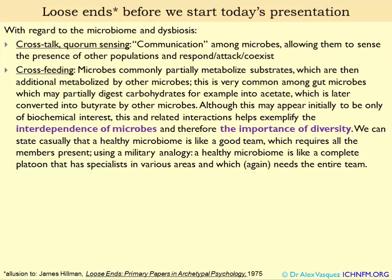Crossfeeding is another important concept. Not all microbes have all of the enzymatic machinery they need — for example, to digest carbohydrates or metabolize phytochemicals. Each microbe addressing a certain type of fiber or phytochemical might only be able to do part of the job. Some microbes can start the process of digestion and create certain metabolites such as acetate, and then other microbes take that acetate and turn it into butyric acid. That's the concept of crossfeeding, and it illustrates the interdependence of gastrointestinal microbes — they depend on each other throughout the chain of metabolic processing.